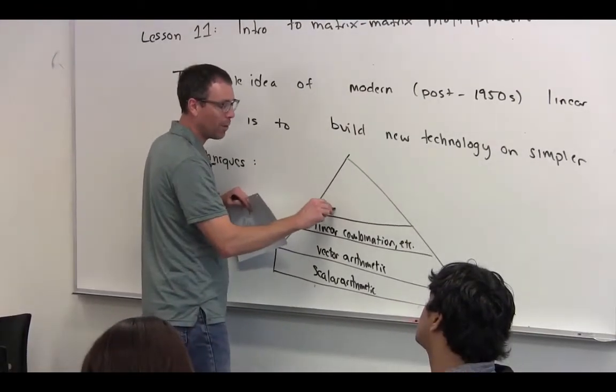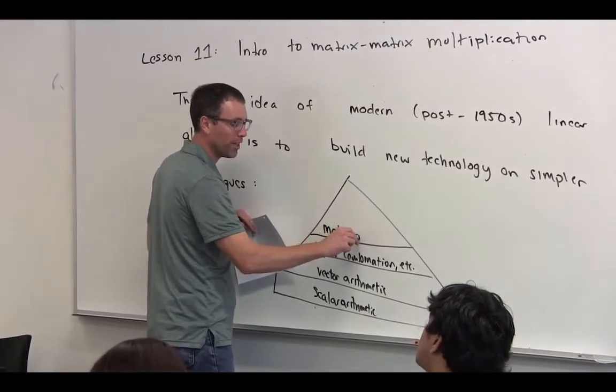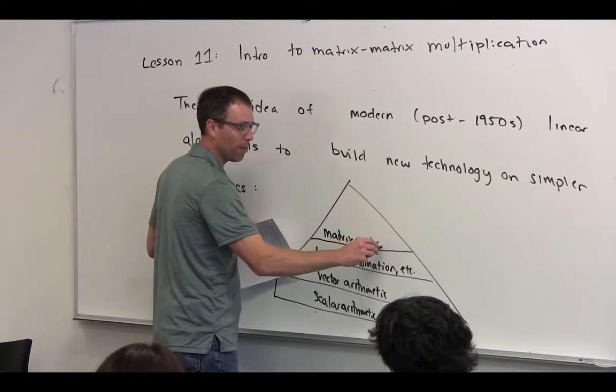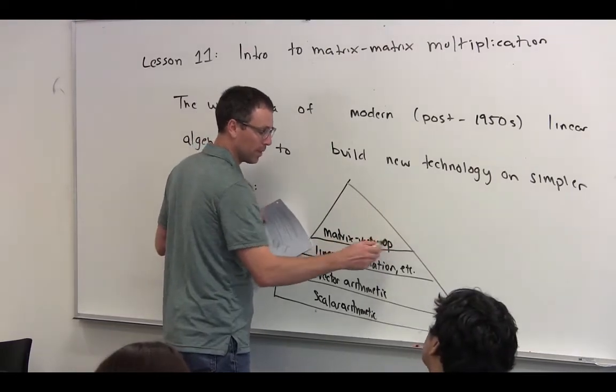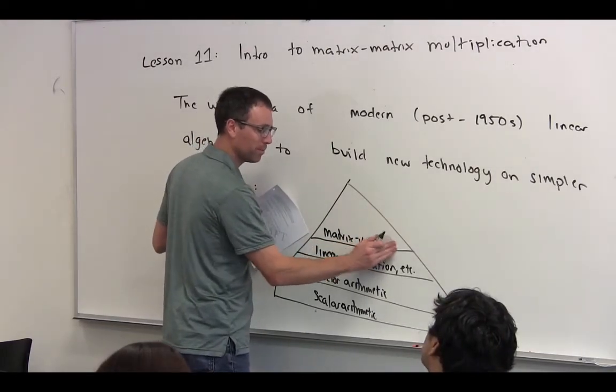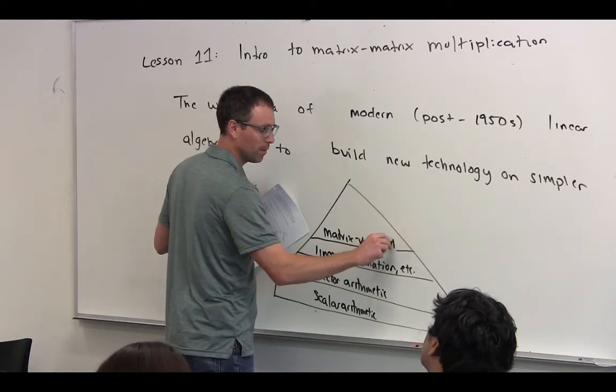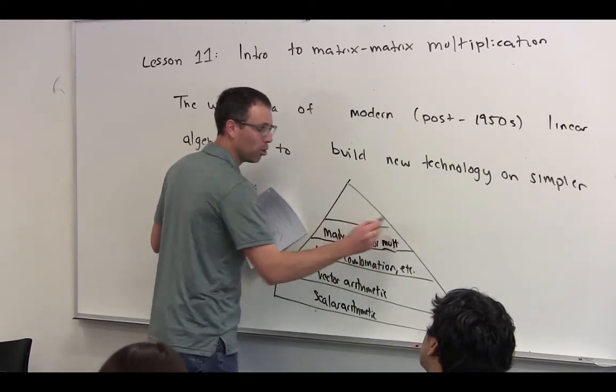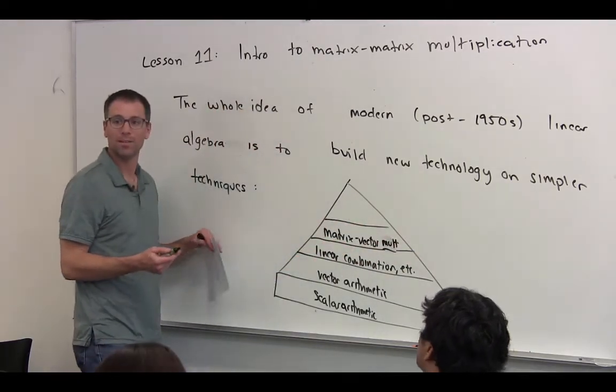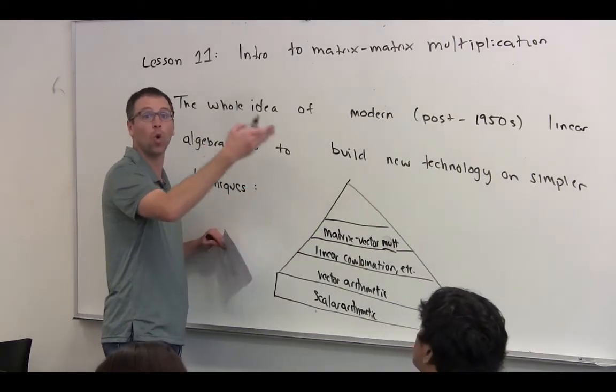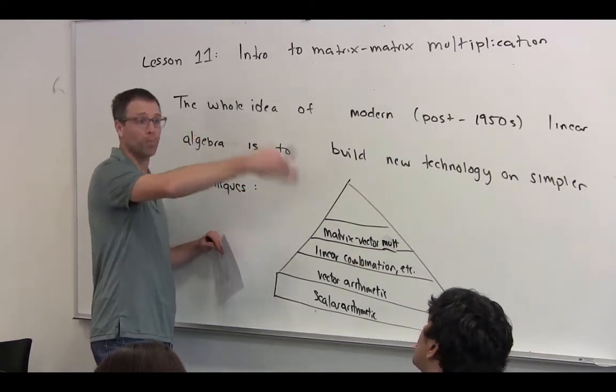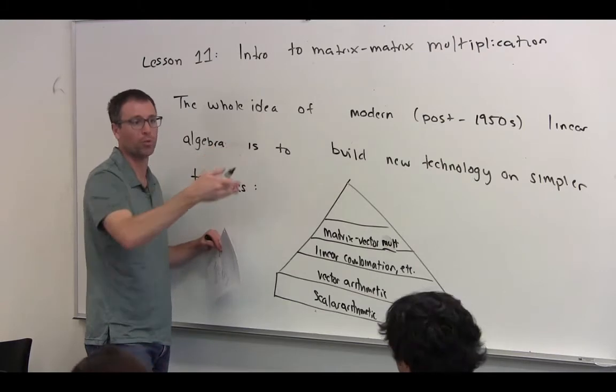Then we had what we called matrix-vector operations, matrix-vector mults. And there are actually two types of matrix-vector multiplications. What were they? Matrix column vector or row vector matrix, right, if I say it in the order in which we look at them.